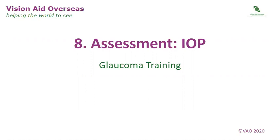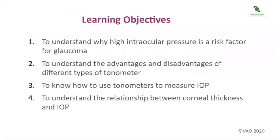This is the 8th in a series of videos on Glaucoma. Module 8 covers the Assessment of IOP. The learning objectives are: to understand why high intraocular pressure is a risk factor for glaucoma, and to understand the advantages and disadvantages of different types of tonometer.